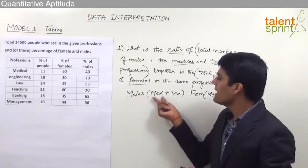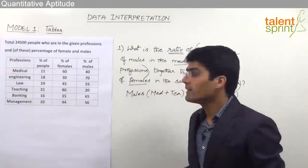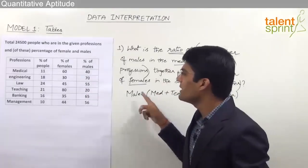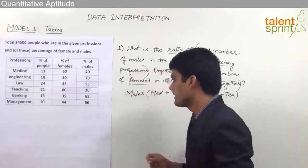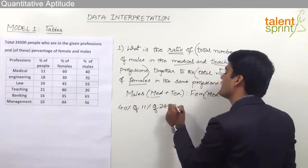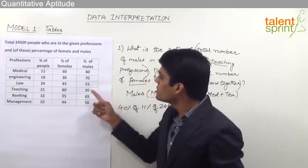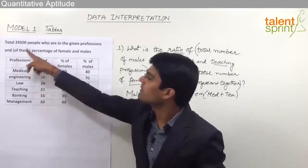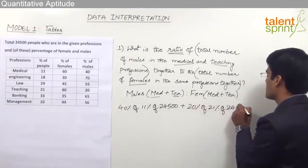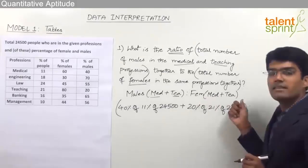The first part required is males in medical profession. The total number of people in medical is 11% of 24,500, and 40% of those are males. So males in medical is 40% of 11% of 24,500. The second part is males in teaching. Males in teaching will be 20% of 21% of 24,500. This gives us the total number of males in medical and teaching combined — the first part of the ratio.